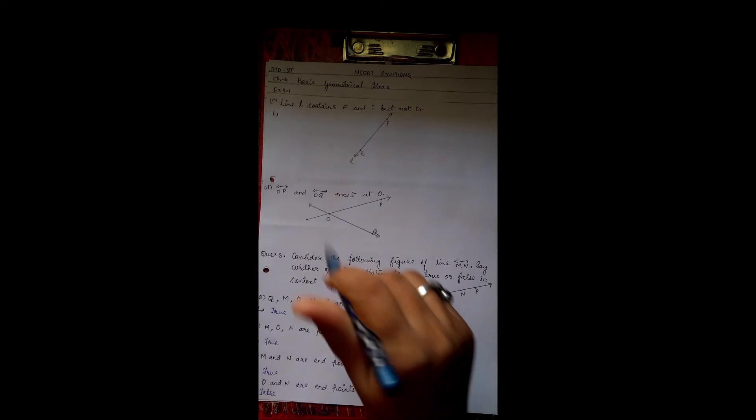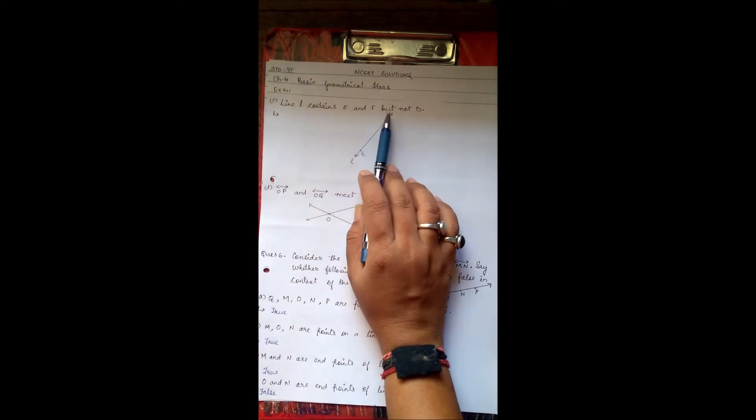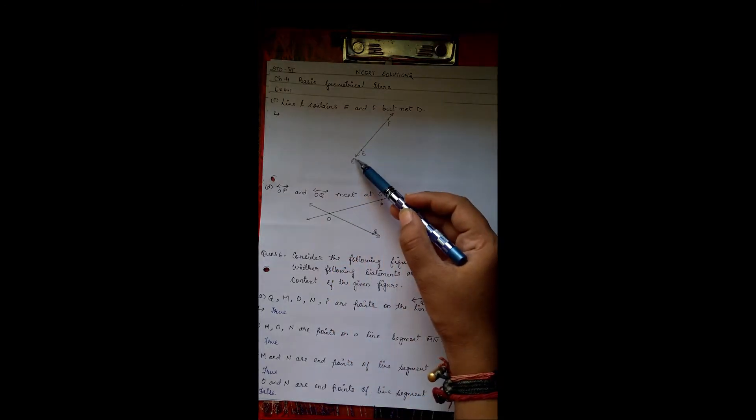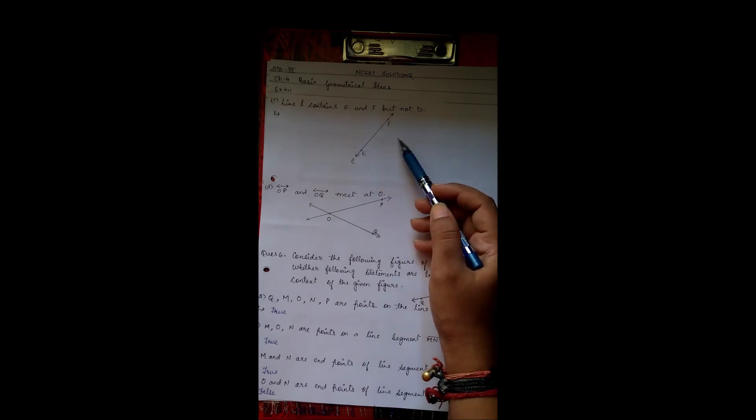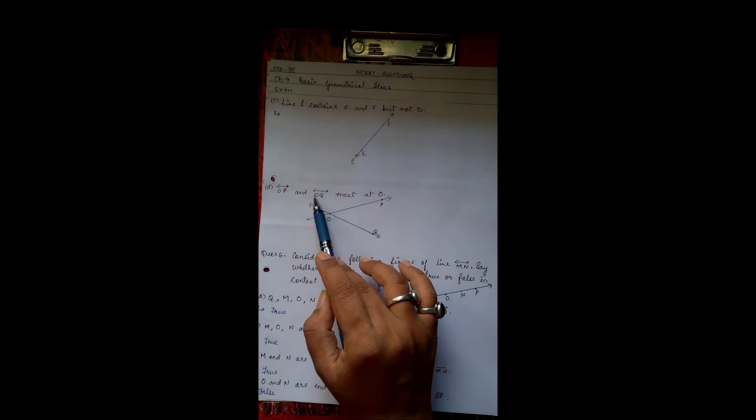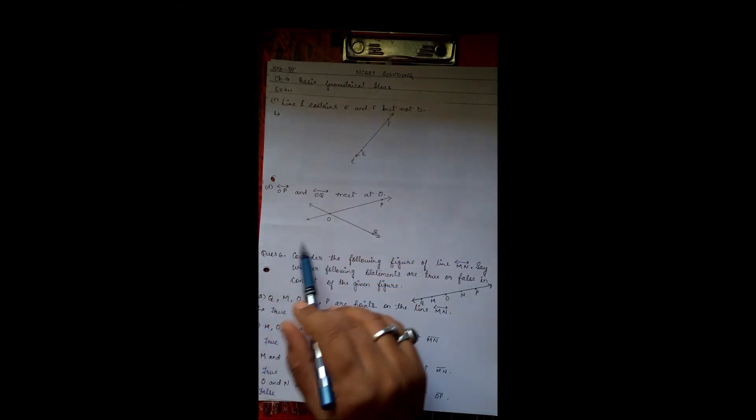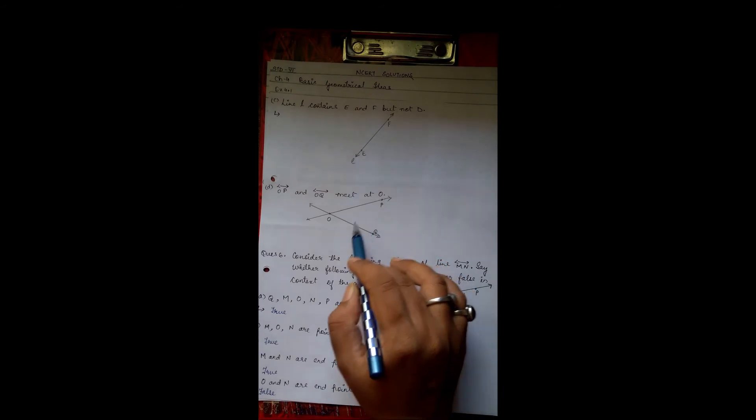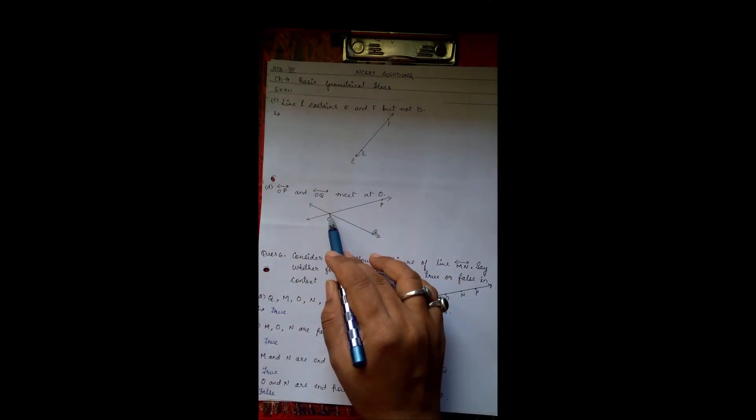Next question: line L contains E and F but not D. Okay, so line L, E and F point is there but D is not there. Then line OP and line OQ meets at O. So line OP and OQ meets at point O.